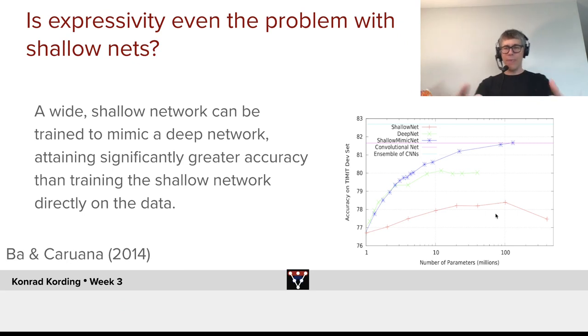Like, we know empirically that shallow nets don't work all that well. So there's a great paper of Ba and Caruana who showed that a wide shallow net can be trained to mimic a deep network, attaining significantly greater accuracy than training the shallow network directly on data. So this is bizarre if you think about it. So you take a shallow neural network, you train it on the data, it does really quite poorly.